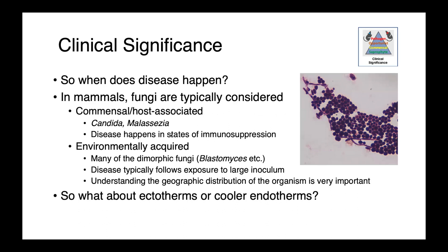In mammalian species, when do we actually see disease? In cases of commensal fungi like candida or malassezia, we see disease in states of immunosuppression or severe perturbations to the normal resident microbiota — for example, when courses of antimicrobials wipe out bacteria, giving fungi new ecological niches. For environmentally acquired organisms like the dimorphic fungi blastomyces or coccidioides, disease follows exposure to a large inoculum, and knowing their geographic distribution is very important to building a relevant differential diagnosis.